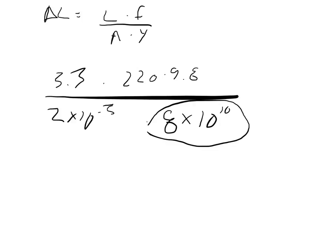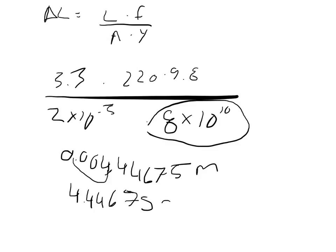You just plug all those numbers into your calculator, and what you're going to get is 0.00444675, but it wants the answer in millimeters and this is in meters, so you have to multiply it by 1,000. You get 4.444675 millimeters.